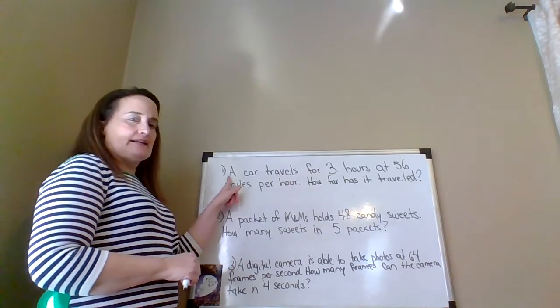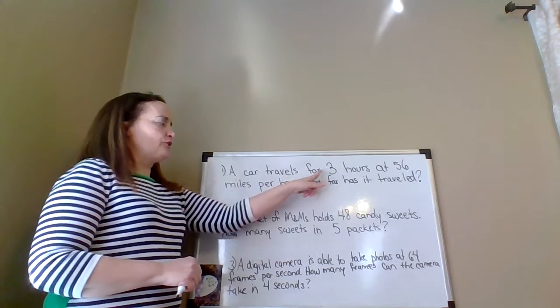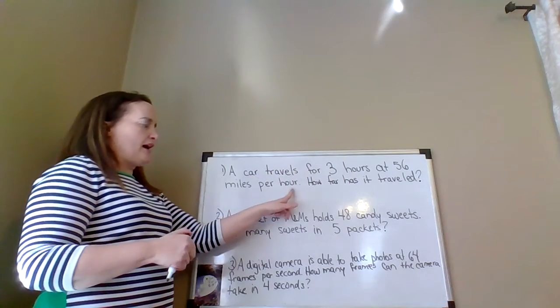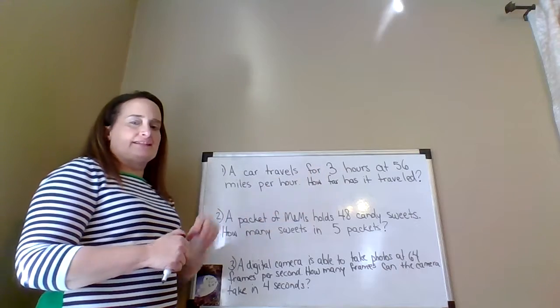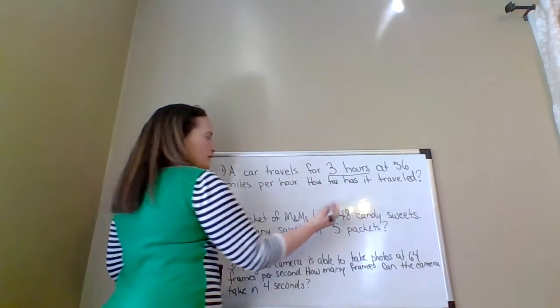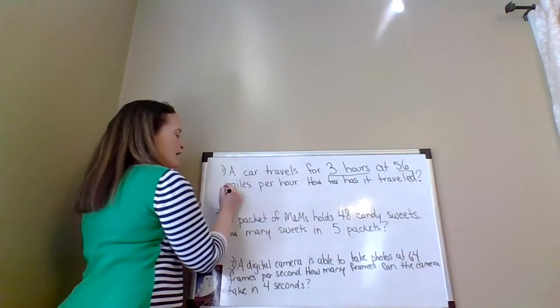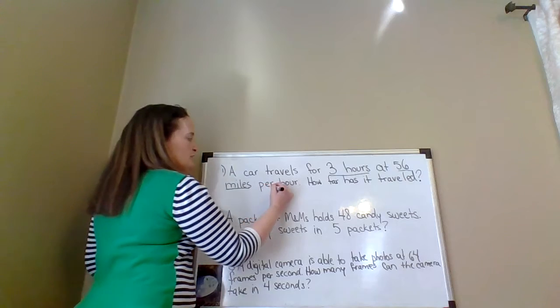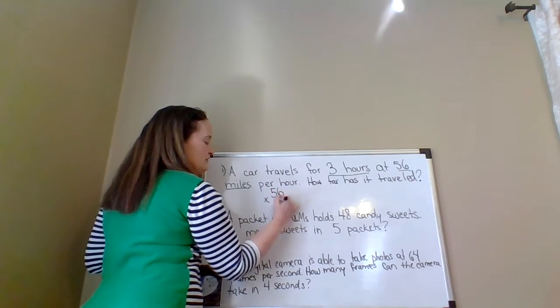Number one says a car travels for three hours at 56 miles per hour. How far has it traveled? So we have three hours, we have 56 miles per hour. So we're simply going to multiply 56 times 3.